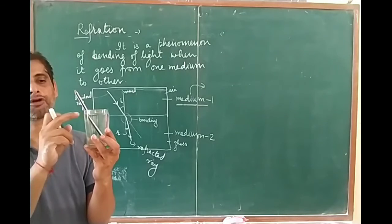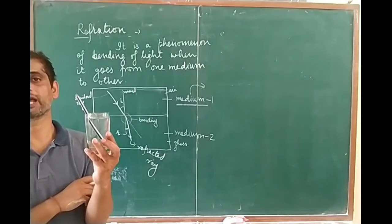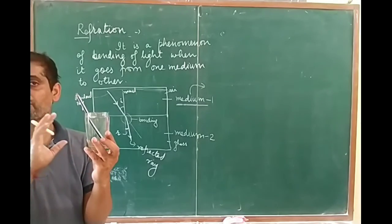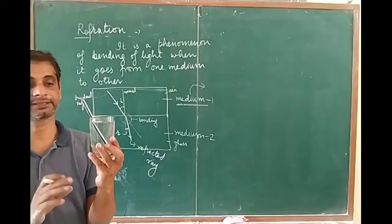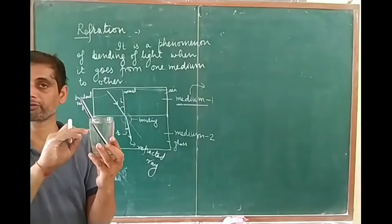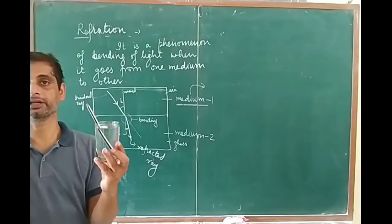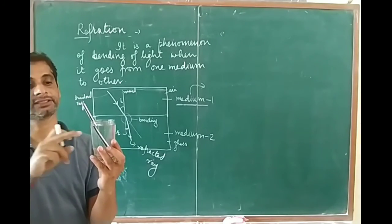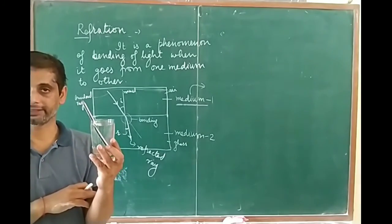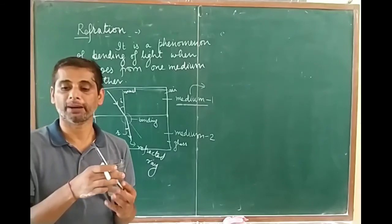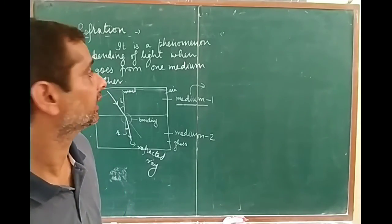This phenomenon of bending is known as refraction. Why does light get bent? Because light is going from water to air. This makes the pencil appear bent. This phenomenon of bending is known as refraction.